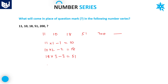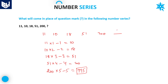The logic is: 11 × 1 − 1 = 10. Next, 10 × 2 − 2 = 18. Next, 18 × 3 − 3 = 51. Next, 51 × 4 − 4 = 200. So the next number should be 200 × 5 − 5. 200 × 5 = 1000, and 1000 − 5 = 995. Therefore, in place of the question mark, 995 should be there.